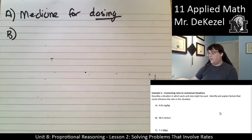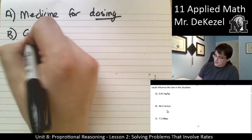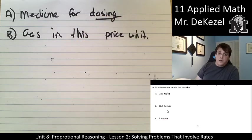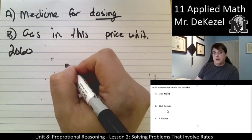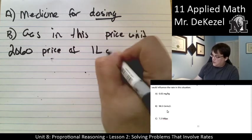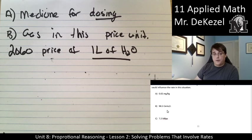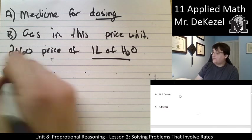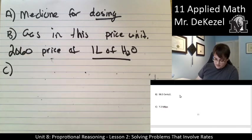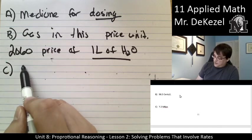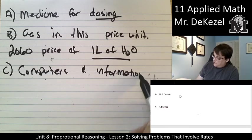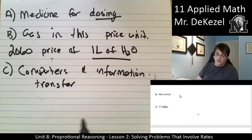For B, 98 cents per liter, well, we might talk about gasoline in this price. Gas in this price unit in the year 2060, this will be the price of one liter of water, maybe. That could happen, who knows. 98 cents per liter of water. If you buy it in a bottle, that's already the price of it. And then C, 7.2 megabytes per second, that would be information transfer speed, like in a computer. So, computers and information transfer. The higher this number, the faster the transfer.